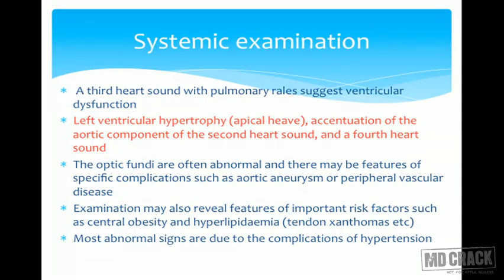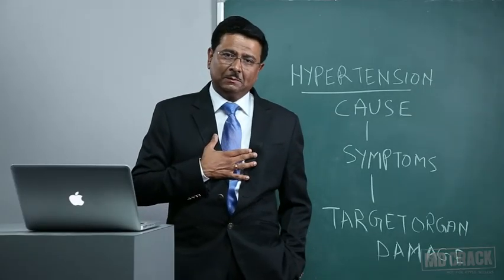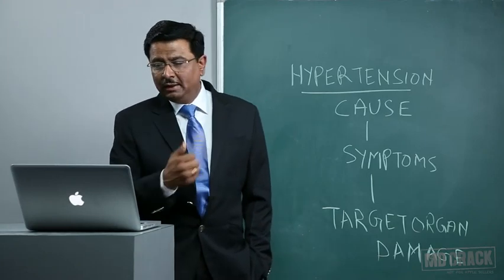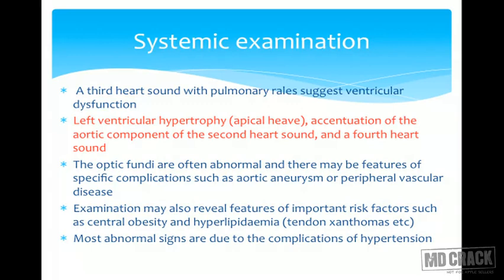On systemic examination, a third heart sound with pulmonary rales suggests ventricular dysfunction. Signs of left ventricular hypertrophy include an apical heave and a forceful apical beat on palpation of cardiac borders. There may be accentuation of the aortic component of the second heart sound and possibly a fourth heart sound. The optic fundi are often abnormal and may show features of specific complications such as aortic aneurysm or peripheral vascular disease. Examination may also reveal features of important risk factors such as central obesity and hyperlipidemia — for example, tendon xanthomas.